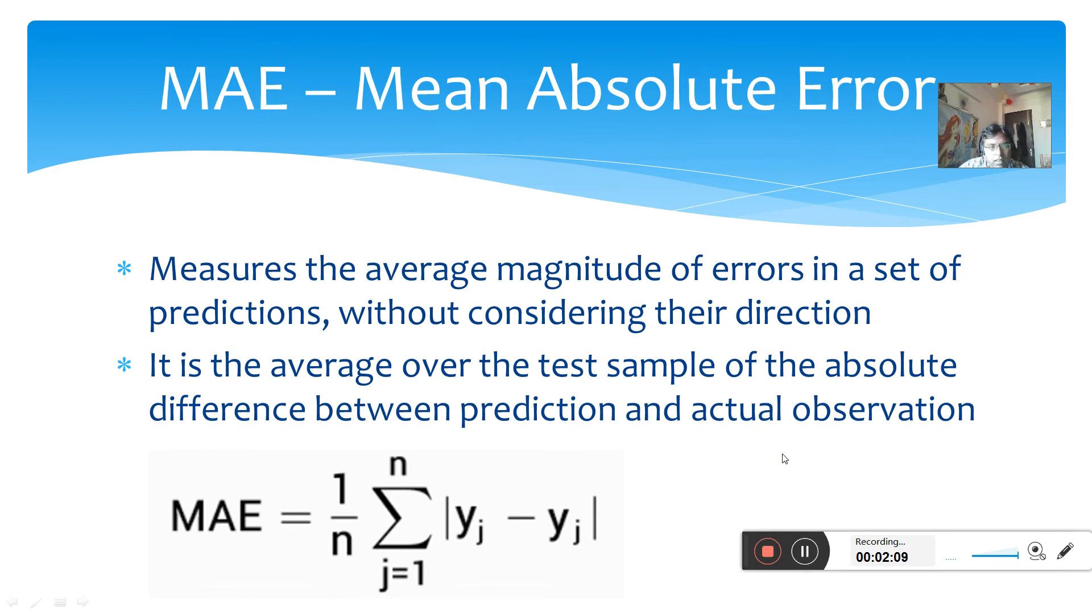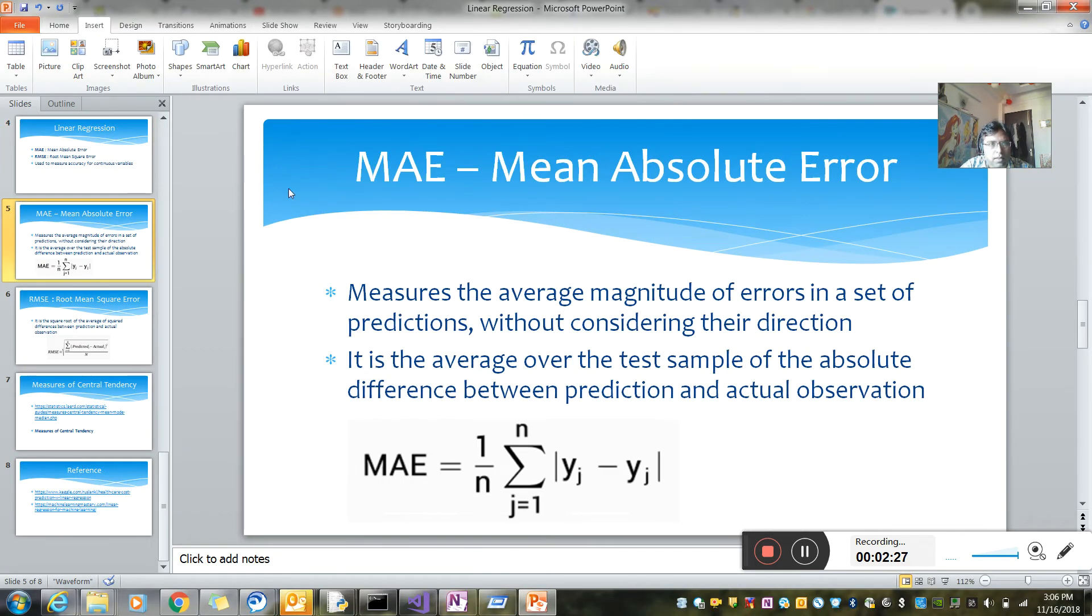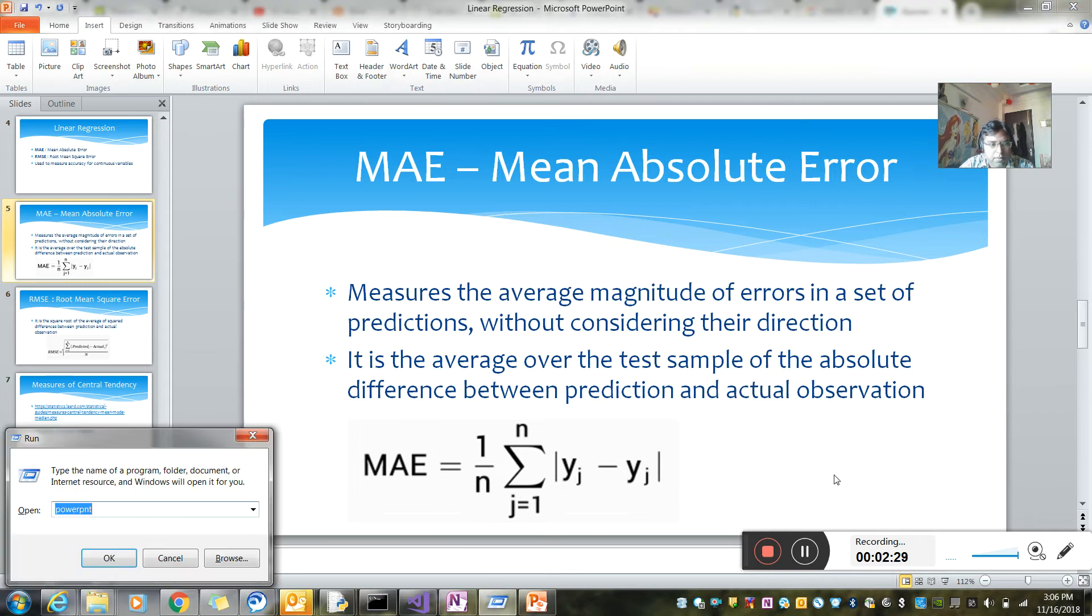It is the average over the test sample of the absolute difference between prediction and actual observations. Let me open Excel to explain you.